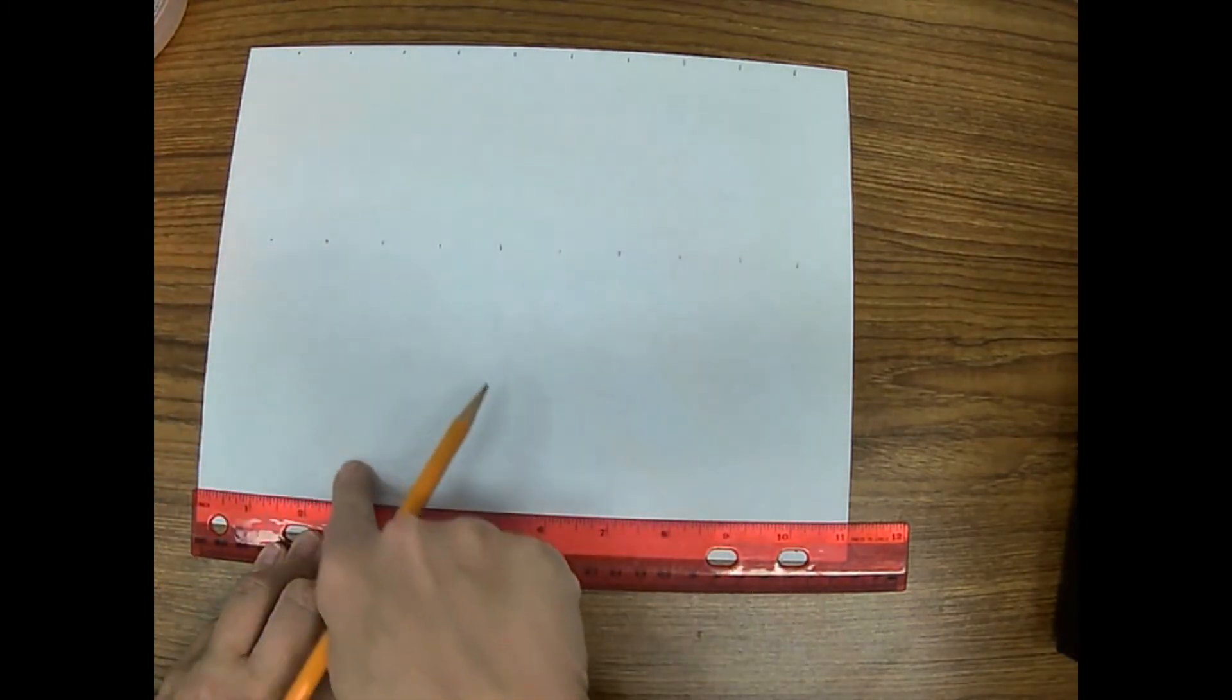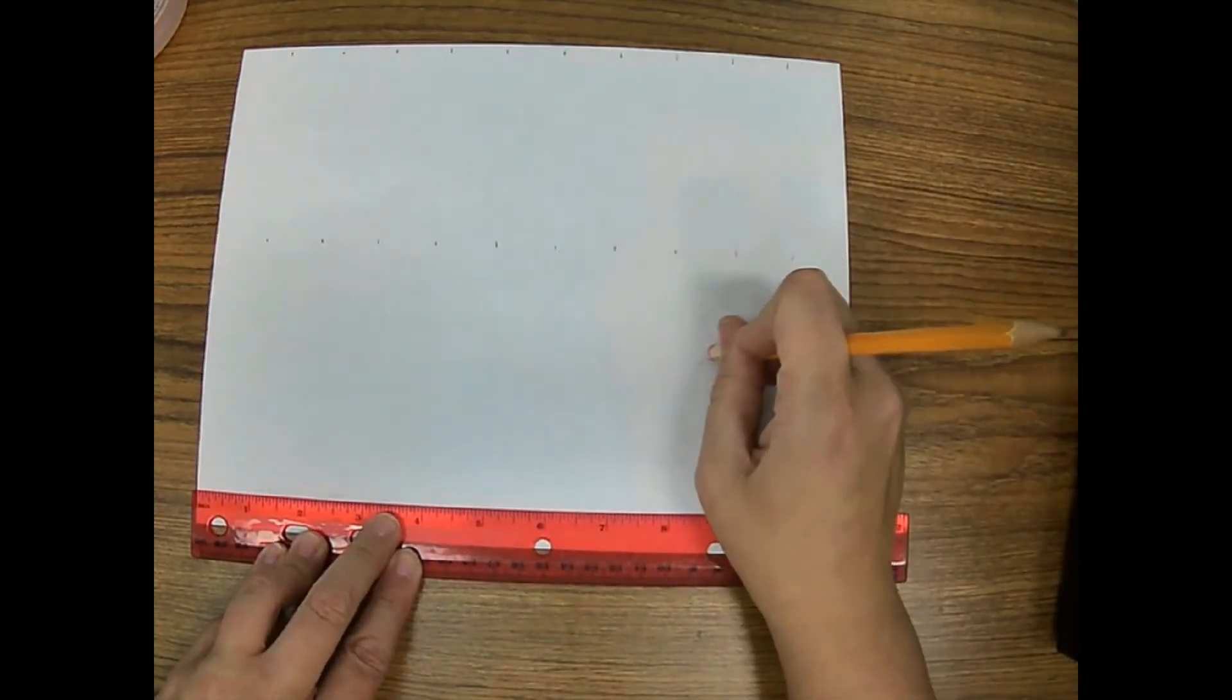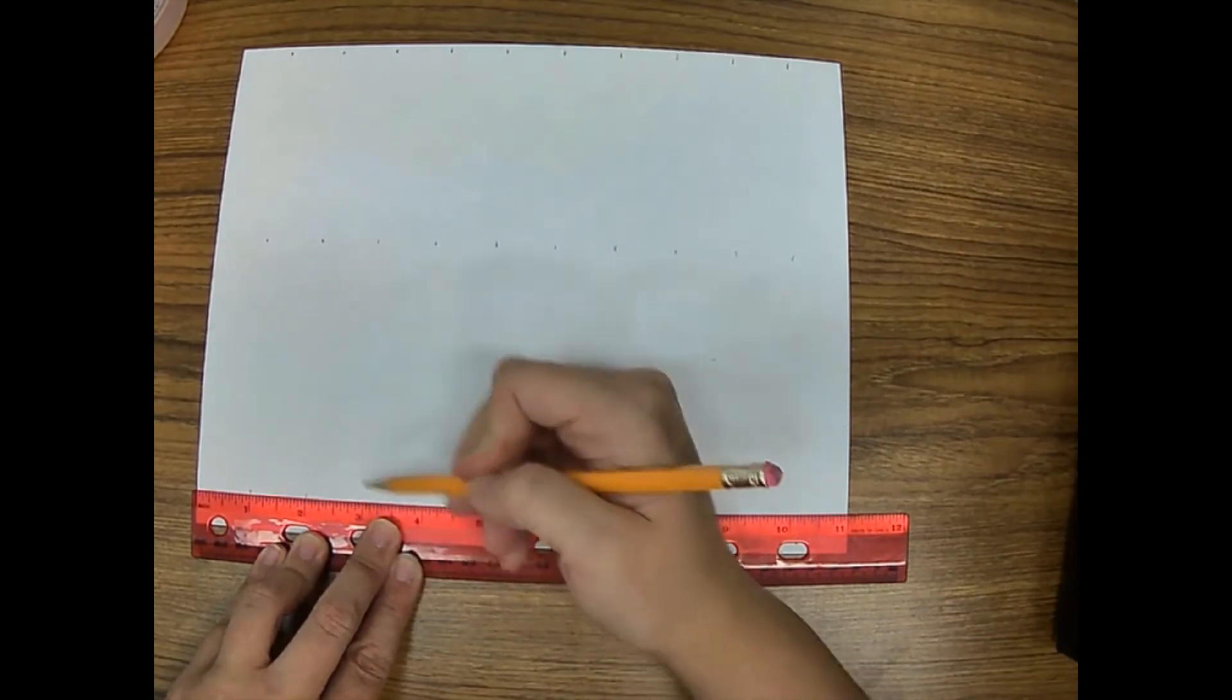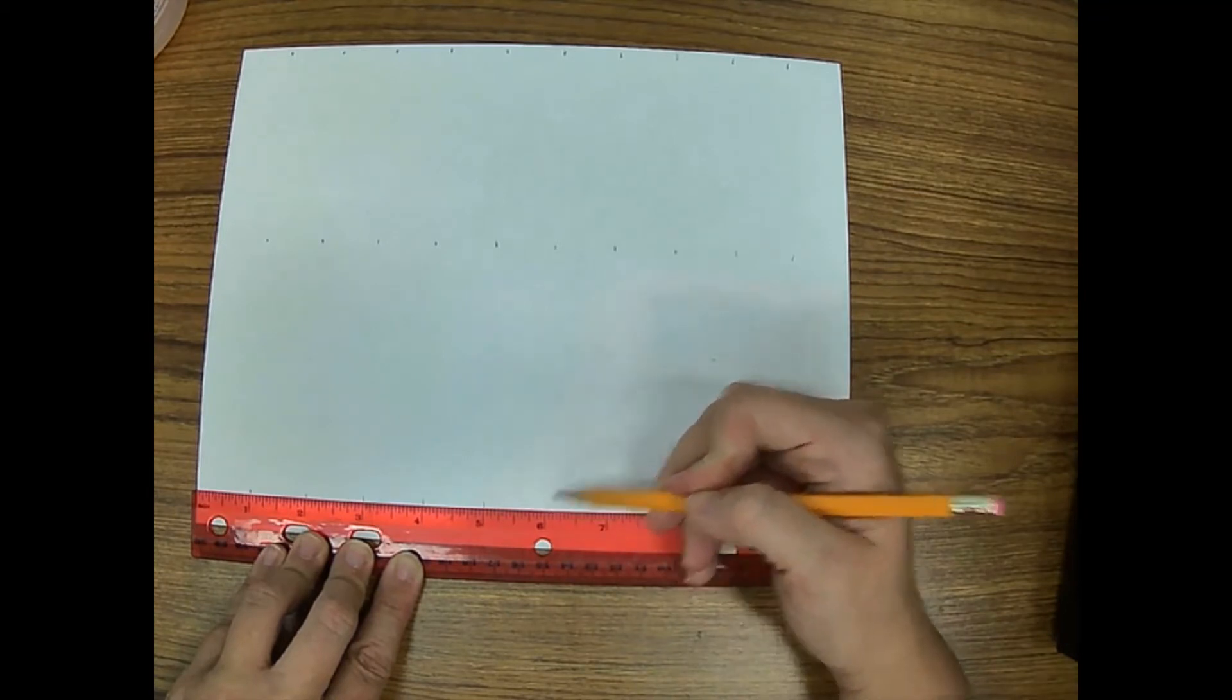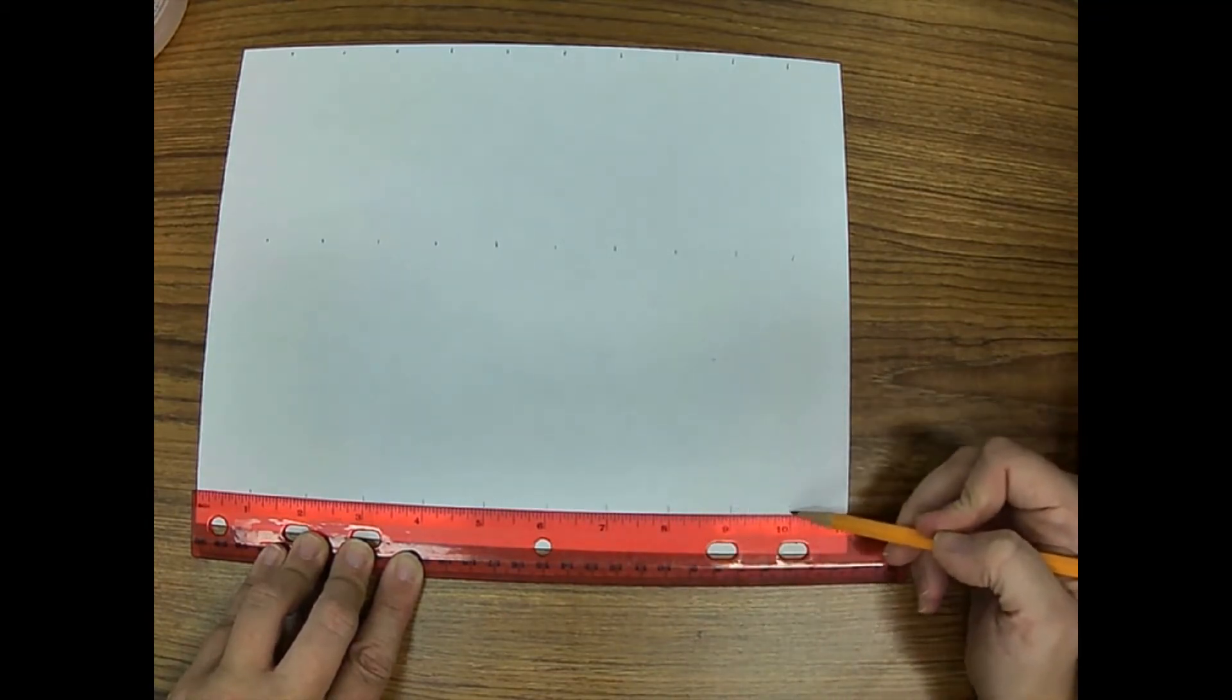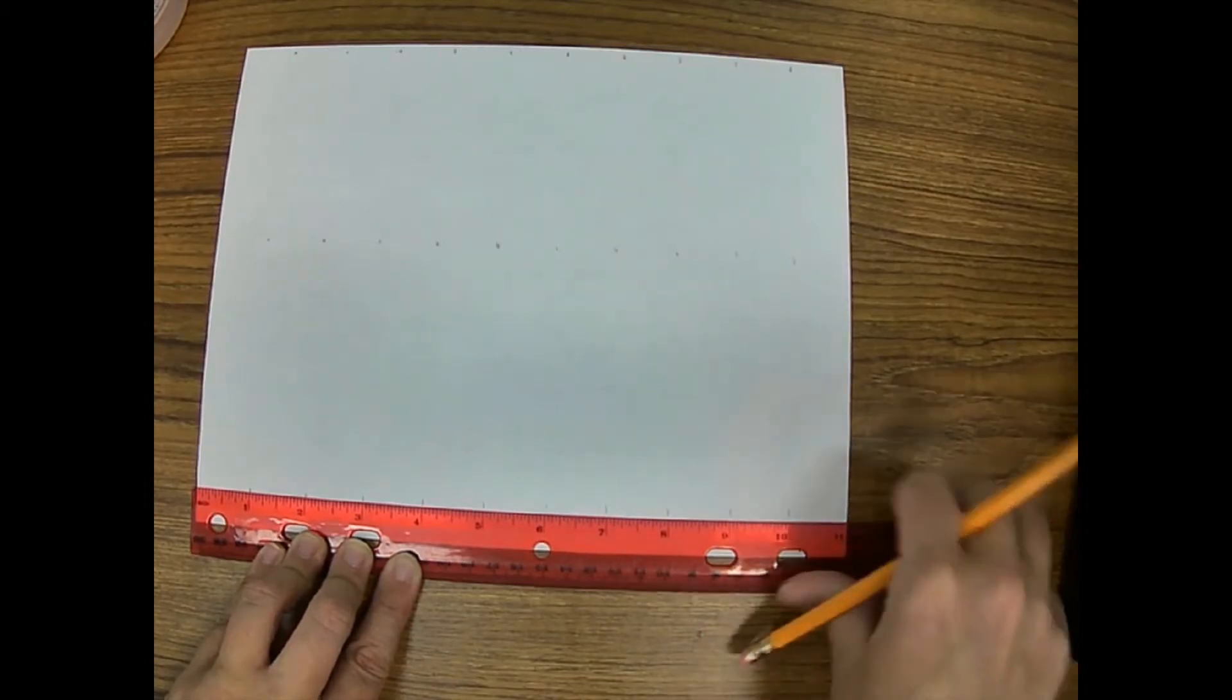Yet again, we're just scooching it down. We're not turning the paper or turning the ruler. Going to make one line at every inch. It's all the way to 10. We can't make a line at 11 because 11 is the edge of the paper.